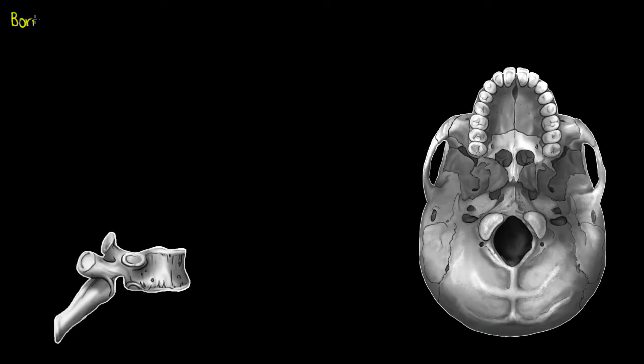Hi guys, today we are going to be talking about bone markings again, with a focus on the markings that aid in the formation of a joint. In the last video we described that bone markings refer to common features or specific uses that structures on bones have. So let's get started right away here.